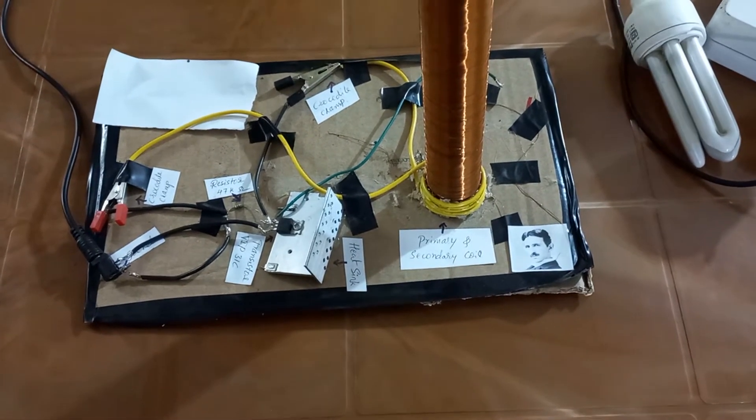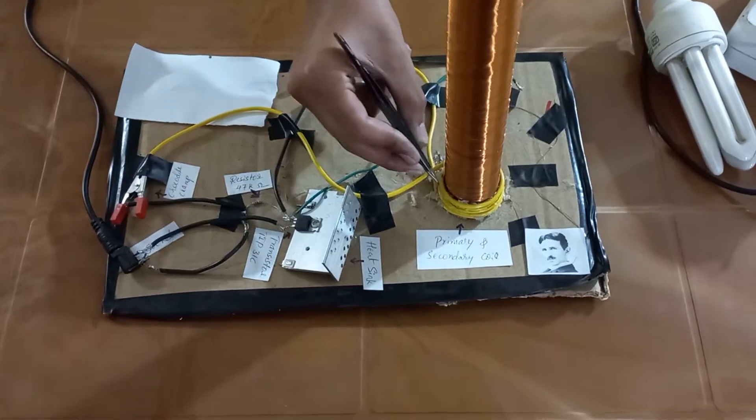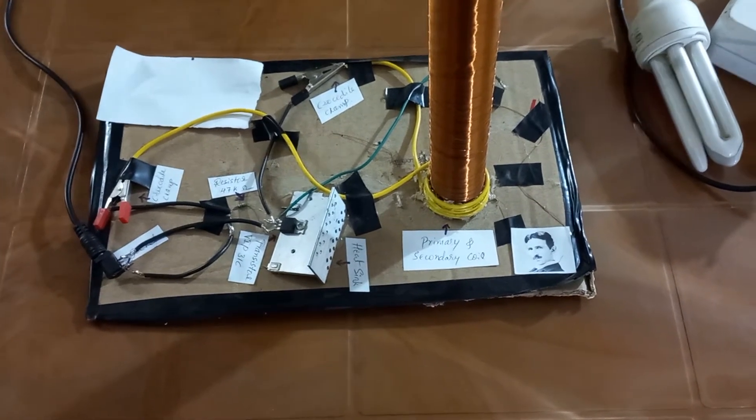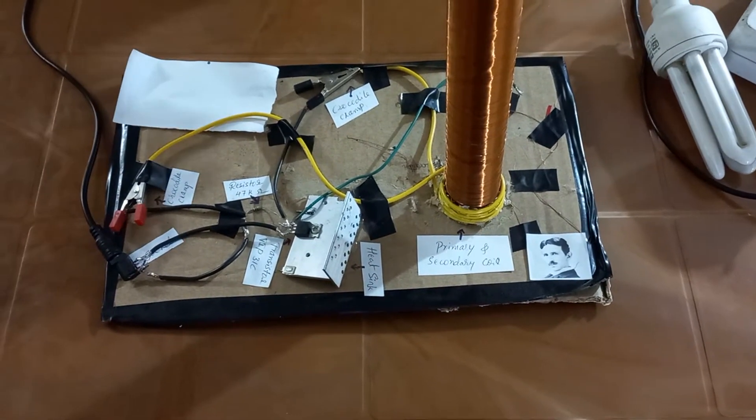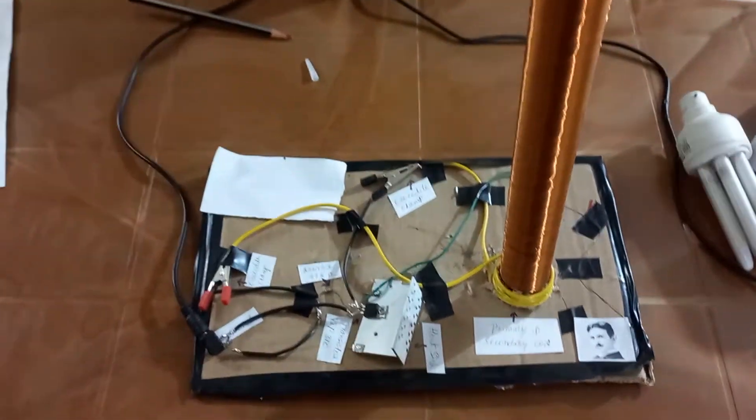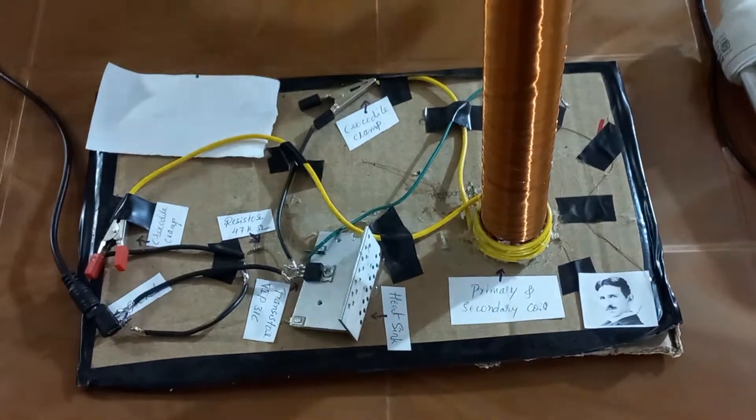And then when this voltage in the primary coil drops from maximum to 0, it again induces the voltage inside this secondary coil making the base of the transistor positive again. So this cycle continues to oscillate.